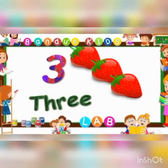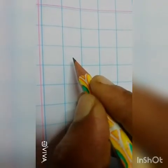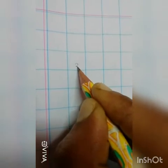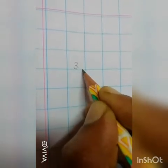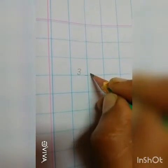Let's see how to write the number name 3. Start from the center of the box. Write number 3. One small sleeping line. Start from the next box.